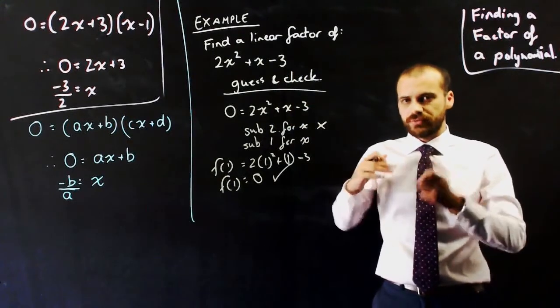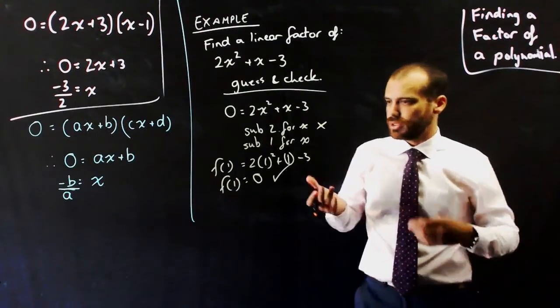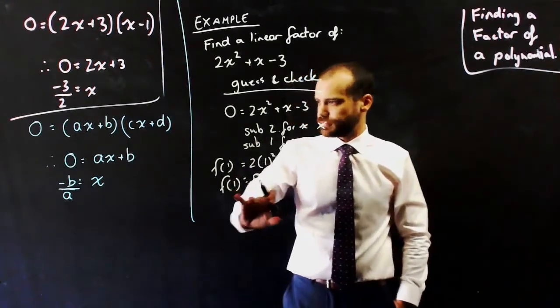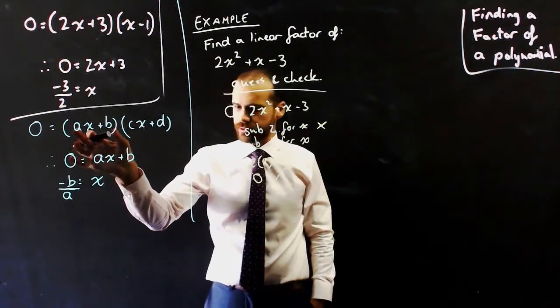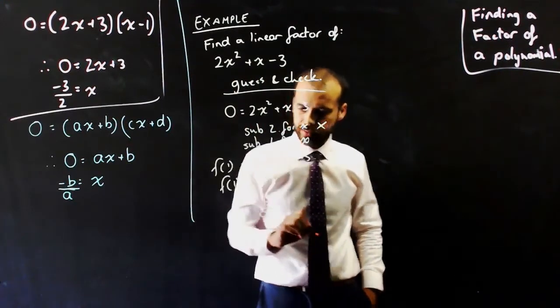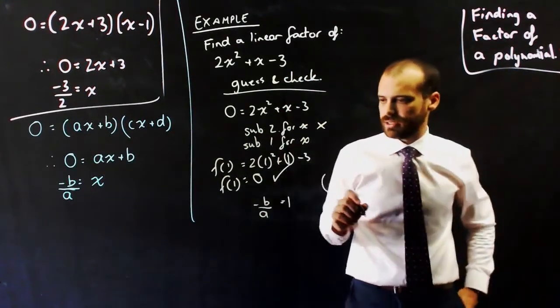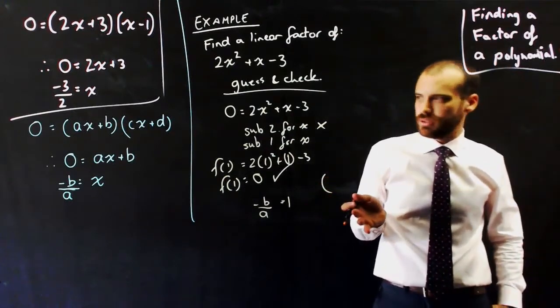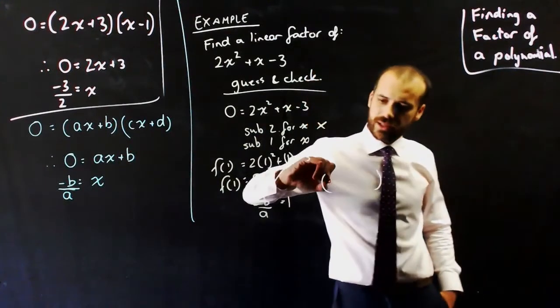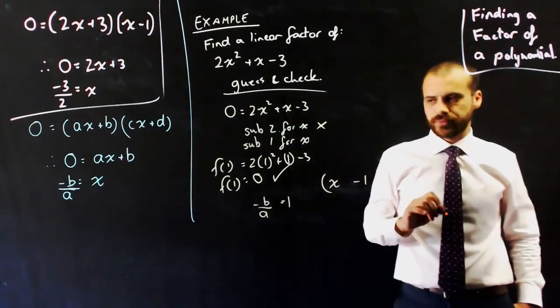That's really important information. We've done our guess and check. We tried the number 2. We tried the number 1. Try the number 0. Try the number negative 1. See what's going to work. 1 works. 1's really important now. Because we can say that the factor here is going to be equal to, so 1 is equal to negative b on a. That's basically what we can say here for our linear factor. So our linear factor here, and we can set this linear factor up however we want, but if I make the a value 1, then our linear factor is going to be x minus 1.